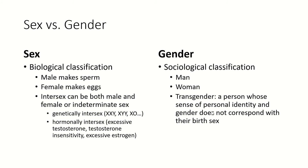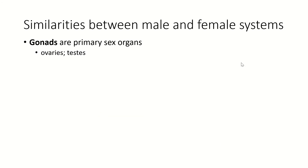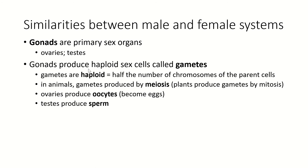Not all men have testes, and not all women have ovaries, because you have to include transgender people in those terms. Let's talk about the similarities between the male and female reproductive systems. The primary sex organs are called the gonads — in the female, those are the ovaries; in the male, those are the testes. The gonads produce the sex cells, the haploid sex cells, and those sex cells are called gametes — that's the eggs and the sperm. Gametes are haploid and in animals are always formed by meiosis.